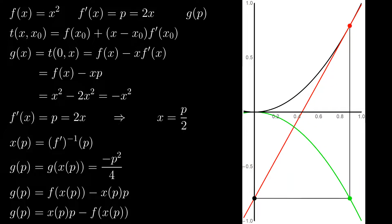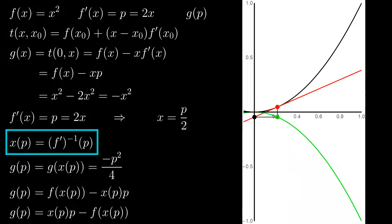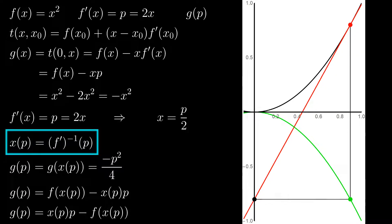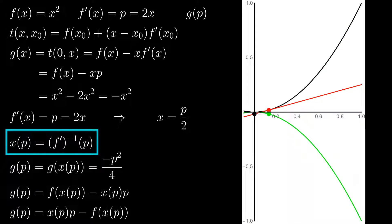as that is a function g of p and not of x. To replace the argument x with p, we have to find the inverse of p of x, which is f prime of x. If the first derivative of f is not invertible, then f has no Legendre transform, thus f prime of x has to be a monotonic function.